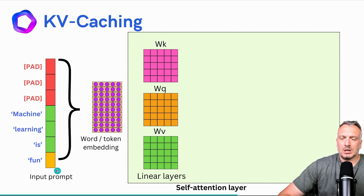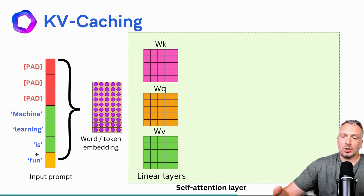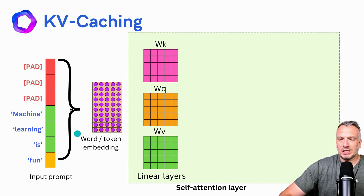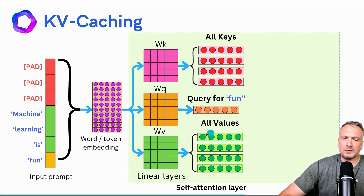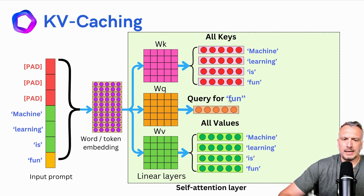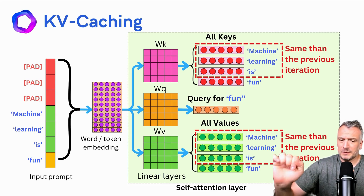Now let's consider the next iteration. Let's assume that the token generated in the previous iteration was 'FUN.' Because we auto-regress, we append this token to the input sequence and pass it through the self-attention layer. We generate all the keys and values for all the input tokens, but we only need to generate the query vector related to the token 'FUN.' The key vectors for 'FUN,' 'IS,' 'LEARNING,' and 'MACHINE' computed in this iteration have exactly the same values as in the previous iteration — we re-computed vectors that have the same values. This is very inefficient.